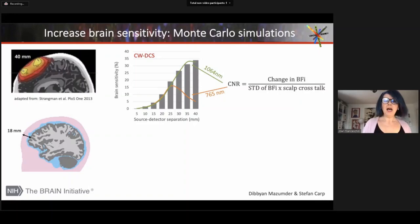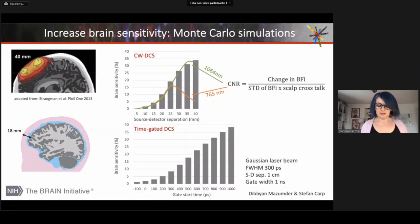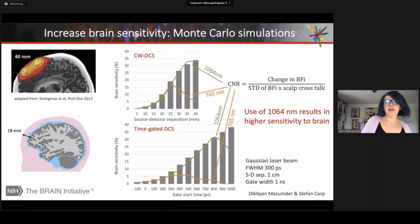The same thing in time gated DCS. Brain sensitivity increases by selecting later gates, late start time with respect to the laser peak at zero. And because of the noise, we can reach higher sensitivity at 1064 nanometers with respect to 765 nanometers.